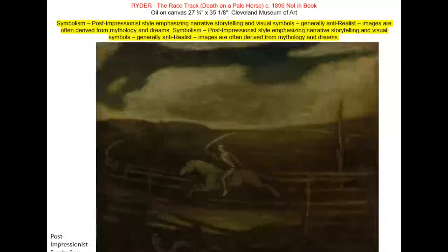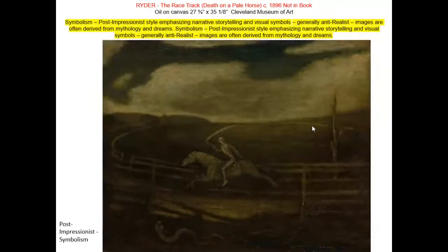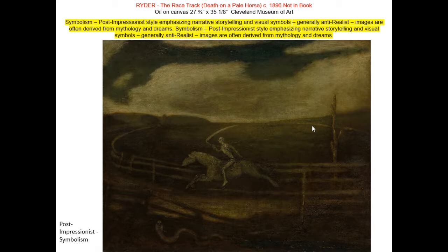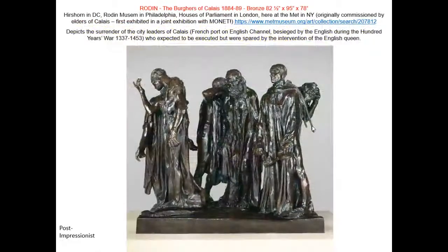Albert Pinkham Ryder is an American Symbolist whose work is often somewhat religious in nature, using both religious and mythological symbols. In this case, you have Death on a Pale Horse — the Grim Reaper — but also the serpent representing sin and Satan.